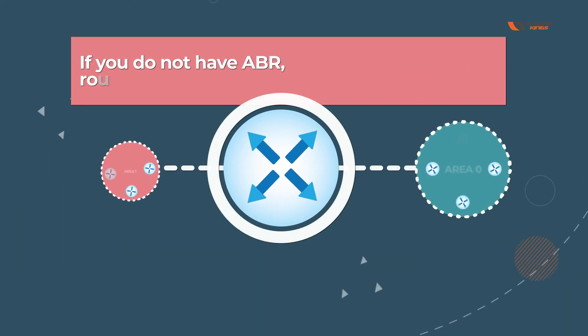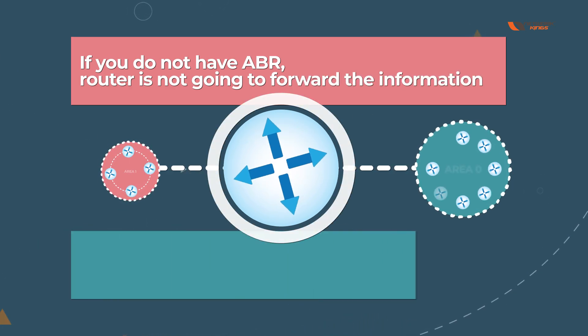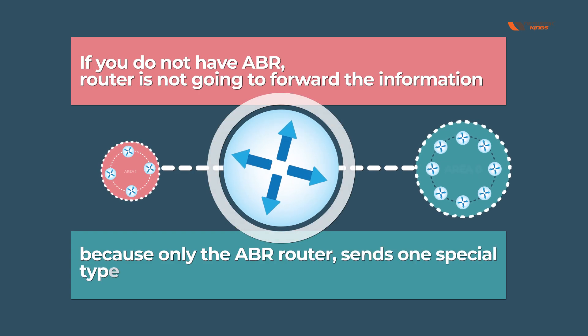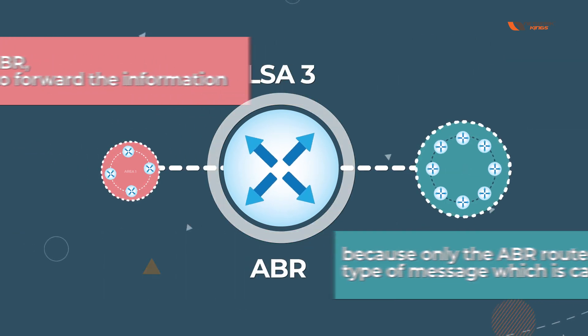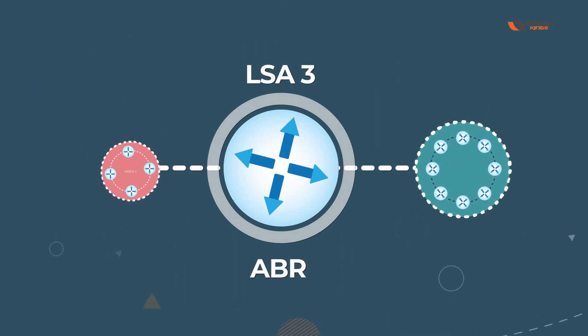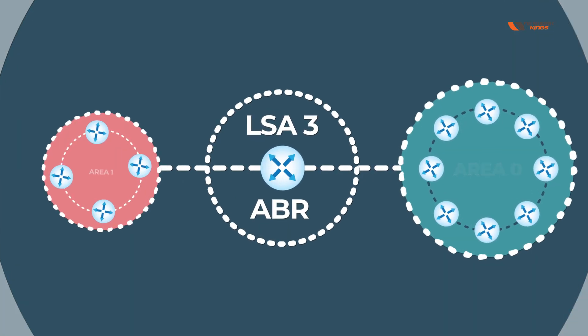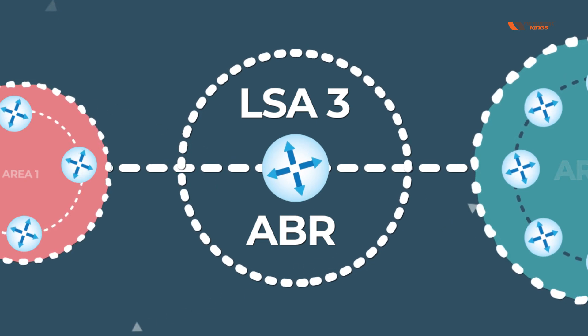If you do not have an ABR, the router will not forward the information, because only the ABR router sends a special type of message called LSA3. This special message or update allows one area's routes to go to another area's routes. ABR is responsible for LSA3.